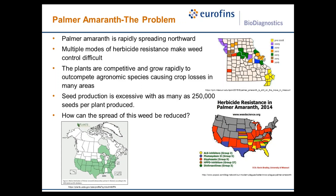One of the challenges with Palmer Amaranth is that it has evolved multiple modes of herbicide resistance to many different types of herbicides, including ALS and glyphosate herbicides, making it very challenging to control using traditional methods. Because the plant is so competitive and grows so quickly, in some cases it's causing complete crop loss where it's abundant. This species is also very fecund, producing up to 250,000 seeds per plant, which is also increasing the spread of this aggressive weed throughout the corn belt.